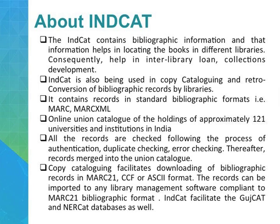The online union catalogue holds records from approximately 121 universities and institutions in India. Large numbers of universities and other institutions are participating in IND-CAT. All types of records — for instance maps, books, theses, and serials — are part of IND-CAT. All records go through a process of authentication, duplication checking, and error checking, after which the records are merged into the union catalogue.